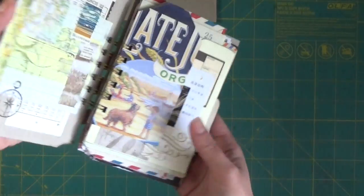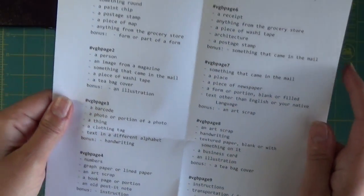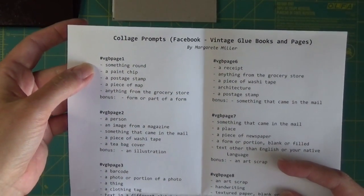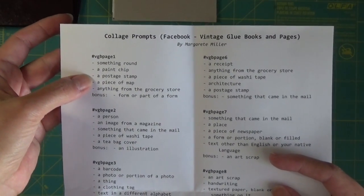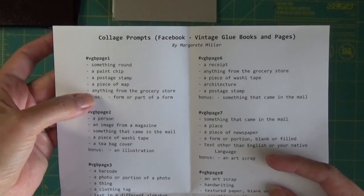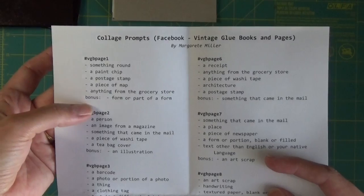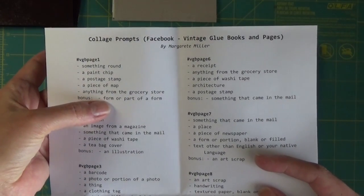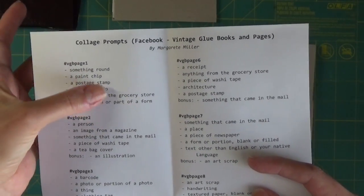So I'll just show you my little printout here. We have prompts. For example, the first challenge was to find something that is round, a paint chip, a postage stamp, a piece of map, and anything from the grocery store. And if you didn't have one of these five, the bonus means that you would take a form or part of a form and swap it for one of these if you didn't have it. So you would use these things.